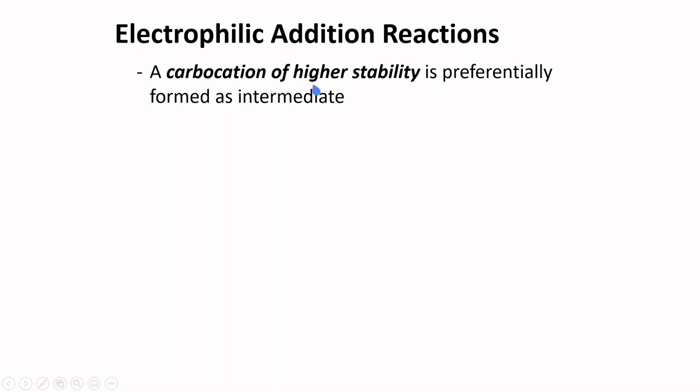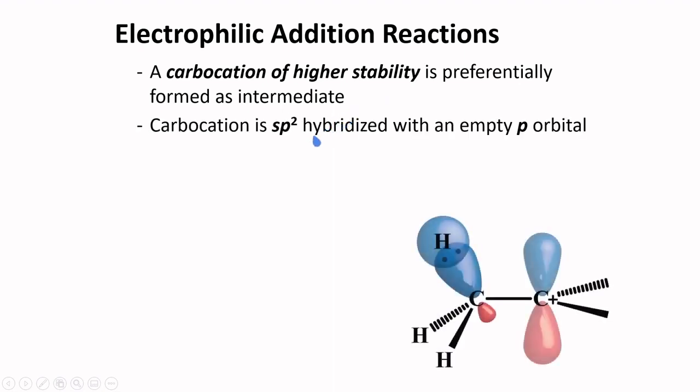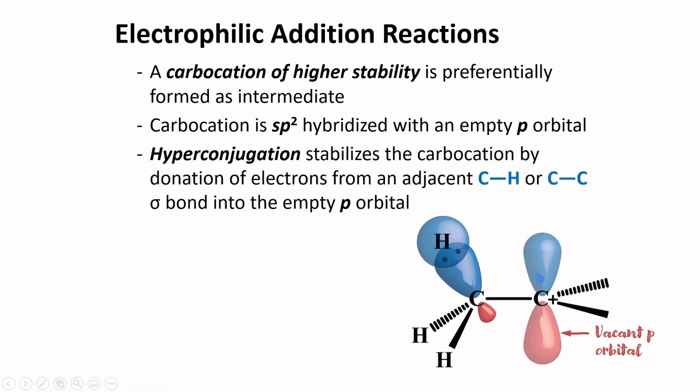As you already know, a carbocation of higher stability is preferentially formed as intermediate. The carbocation is sp2 hybridized. It has a trigonal planar arrangement and contains a p orbital that is empty. Right next to this p orbital is a sigma bond, and this sigma bond may be aligned in such a way that it can interact with this empty p orbital and help in its stabilization. Thus, we have a phenomenon called hyperconjugation. Hyperconjugation stabilizes the carbocation by donation of electrons from an adjacent C-H or C-C sigma bond into the empty p orbital.